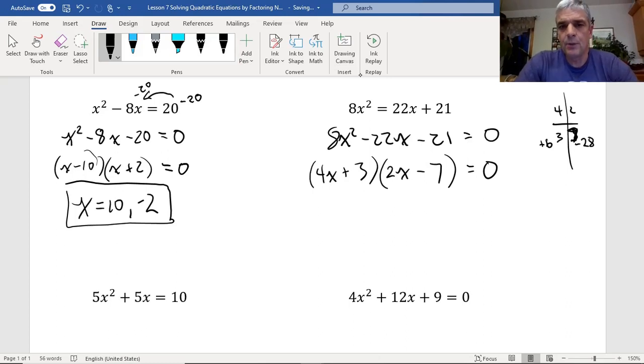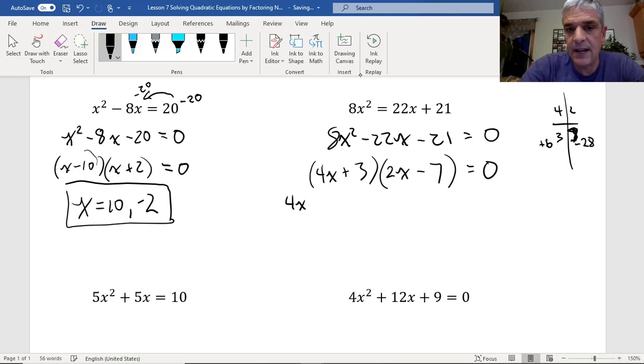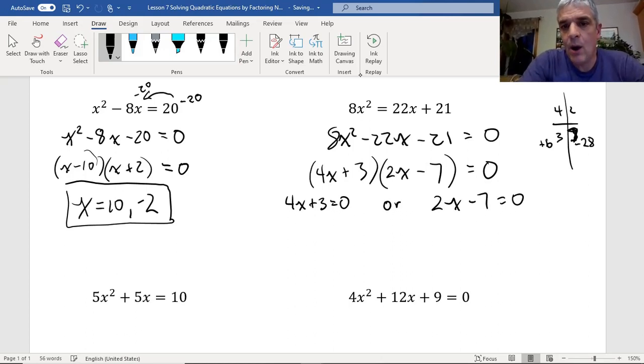Now this is a little trickier because now my answers are not so obvious. I need to know when this equals 0 or this equals 0 because that's what will satisfy my equation. So I have to set this equal to 0 and this equal to 0. And generally speaking, in math, we do it like this. We say 4x plus 3 equals 0, or we say 2x minus 7 equals 0. And now I'm going to solve each of these two equations.